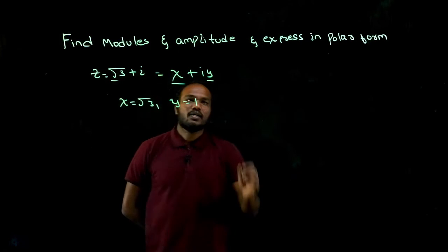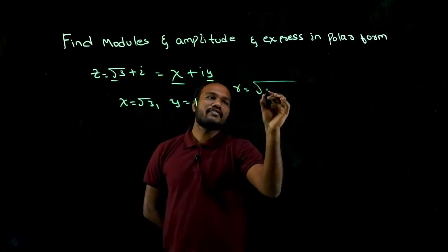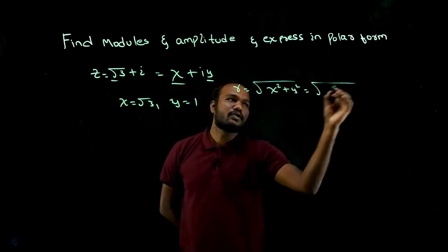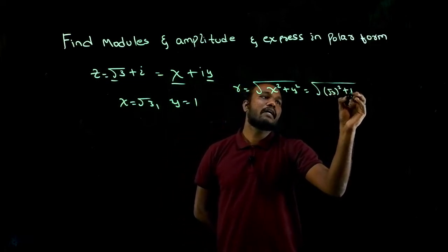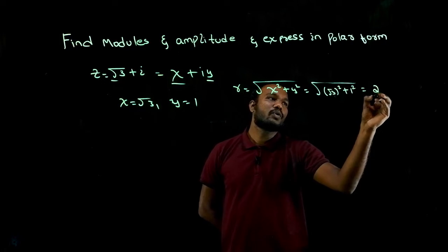The modulus r is the square root of x² plus y². If I substitute that, it's √(√3)² + 1², which equals √(3 + 1) = 2. So this is the value of r.